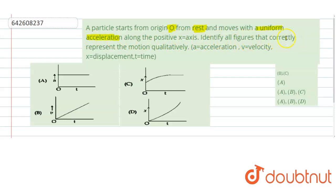Let us identify all the figures that correctly represent the motion qualitatively, where a is acceleration, v is velocity, x is displacement and t is time. So these are the graphs and these are the options.